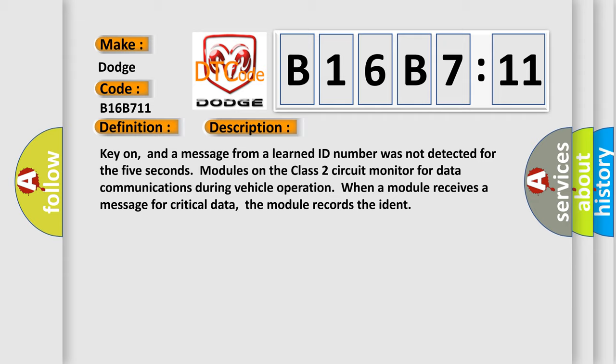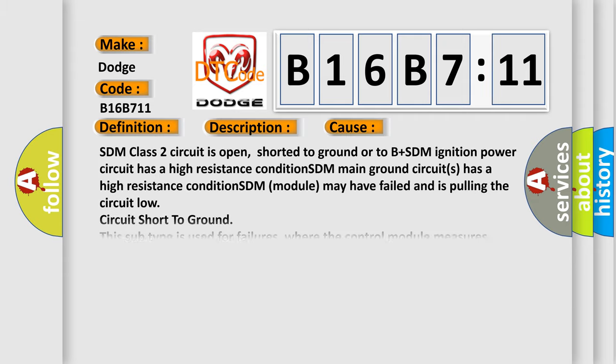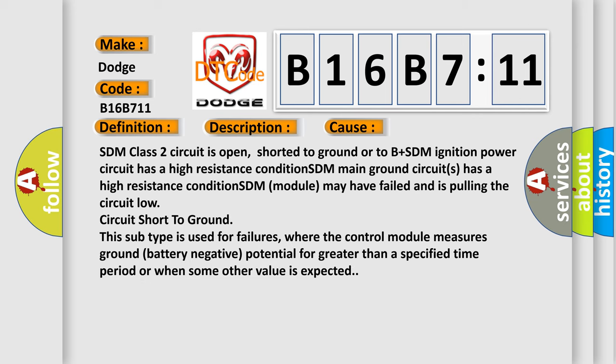This diagnostic error occurs most often in these cases: SDM class 2 circuit is open, shorted to ground or to B plus. SDM ignition power circuit has a high resistance condition. SDM main ground circuits has a high resistance condition. SDM module may have failed and is pulling the circuit low. Circuit short to ground. The data on this subtype is used for failures where the control module measures ground battery negative potential for greater than a specified time period or when some other value is expected.